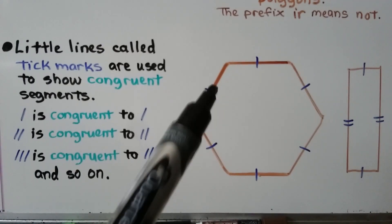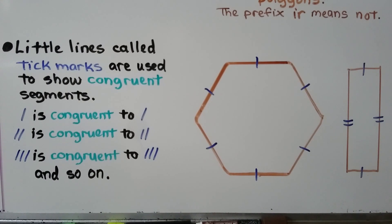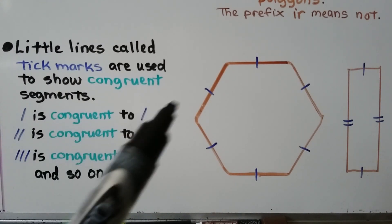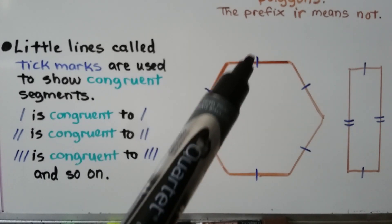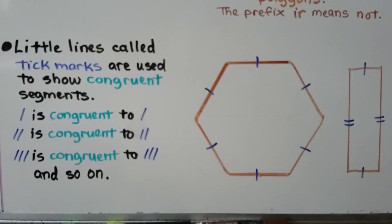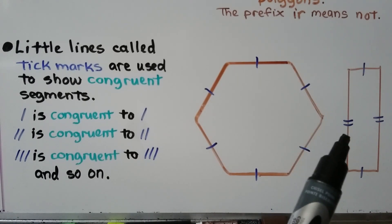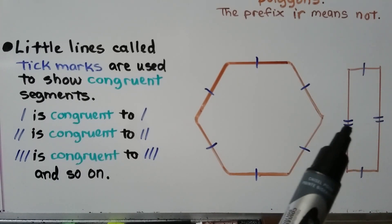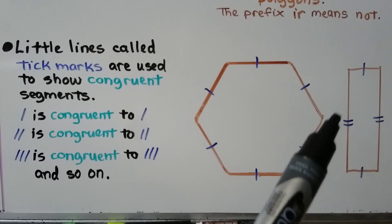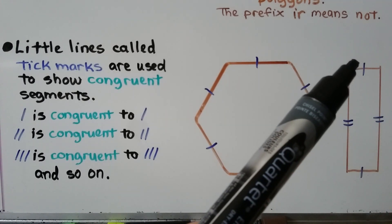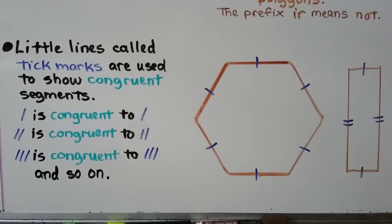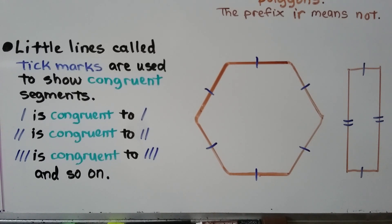These little lines are called tick marks, and they're used to show congruent segments. If you see one tick mark, it means that segment is congruent to another segment with one tick mark. Two tick marks means those two segments are congruent to each other. If a side had three tick marks, it would be congruent to another side with three tick marks, and so on — you could have four, five, depending on how many sides there are.